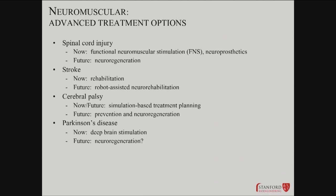For spinal cord injury, people are looking at electrode-based stimulation. For stroke, some of these rehab programs are very repetitive — maybe instead of an occupational or physical therapist, an actual robot could handle this. That's something people are working on. And particularly for stroke, but also relevant for cerebral palsy or other musculoskeletal disorders, could we have an automated rehab process? Certainly being thought about for cerebral palsy and Parkinson's disease as well.